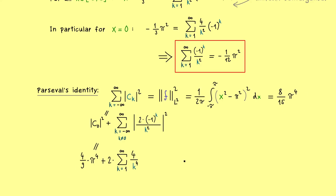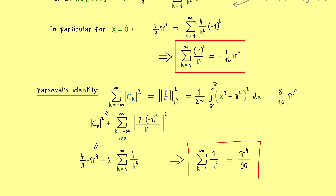Bringing the constant with π from the left-hand side to the right-hand side gives a sum formula. Dividing by the factor 8 we get the sum formula for 1/k⁴: Σ 1/k⁴ = π⁴/90. By using the same Fourier series as before we got out a second nice sum formula — also a surprising gift from Fourier series theory.